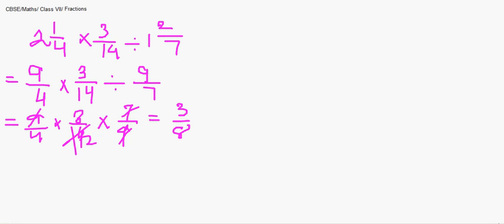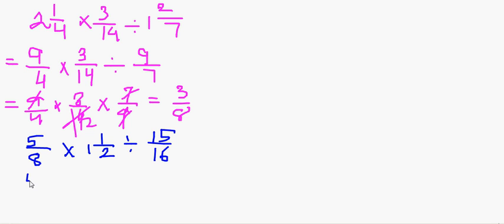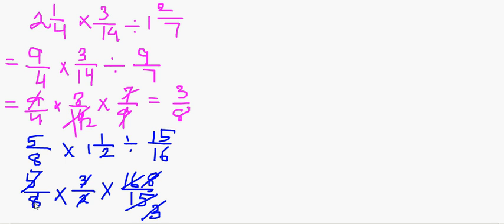Now we can take up one more such question maybe. I write it here. It's a small one: 5 by 8 multiplied to 1 whole 1 by 2 divided by 15 by 16. Again the same process as we did in the previous one. I'll convert this into an improper fraction that's giving me 3 by 2 and the same step I'm converting this into the reciprocal that is 16 by 15. Now if I cancel this I'm getting a 3, this also gives us a 3. Herein I have 8. Oh god, I'm getting the answer is 1.